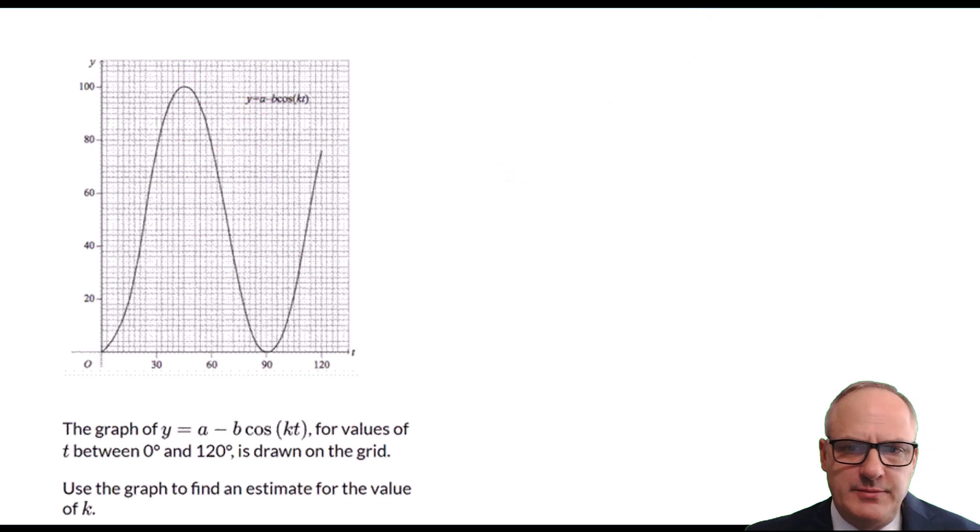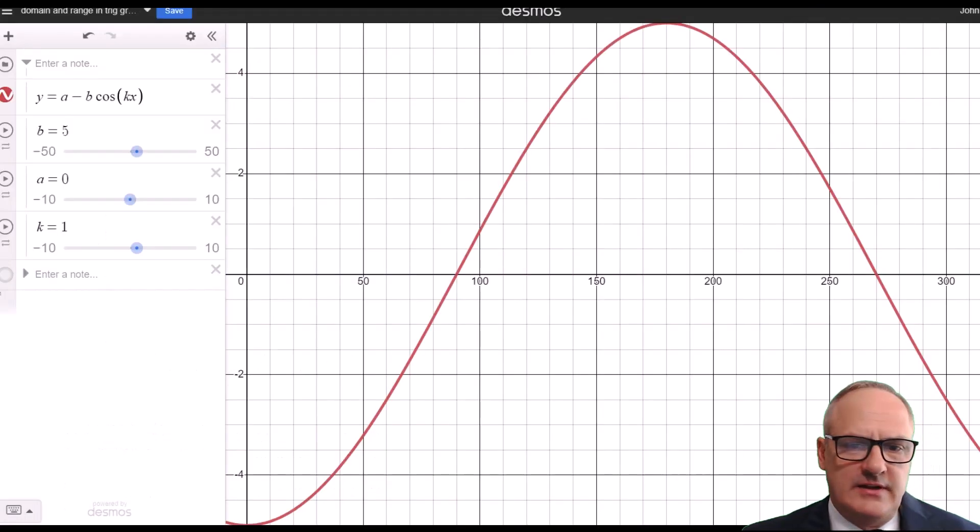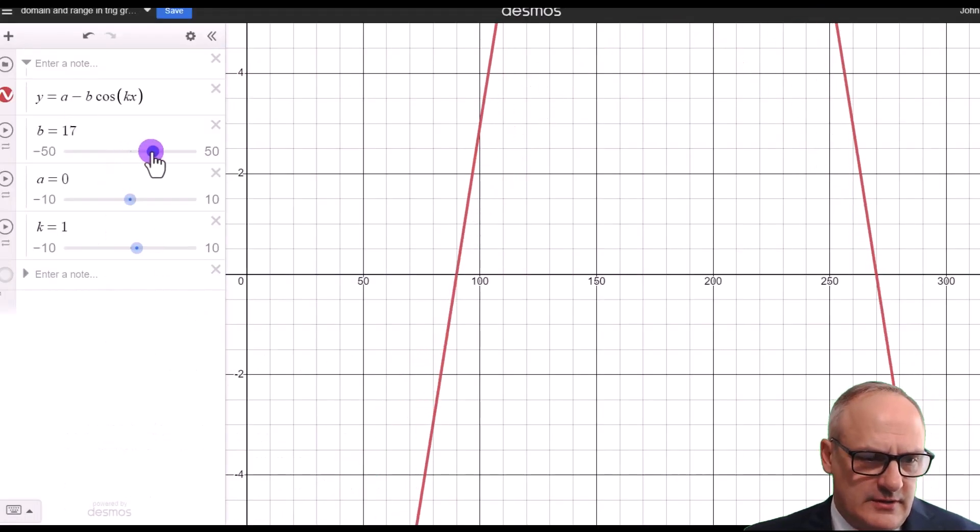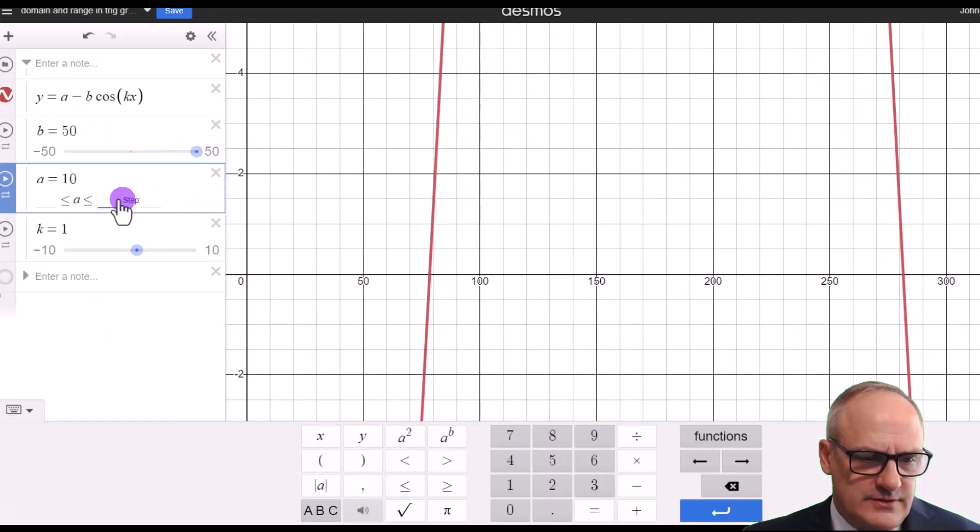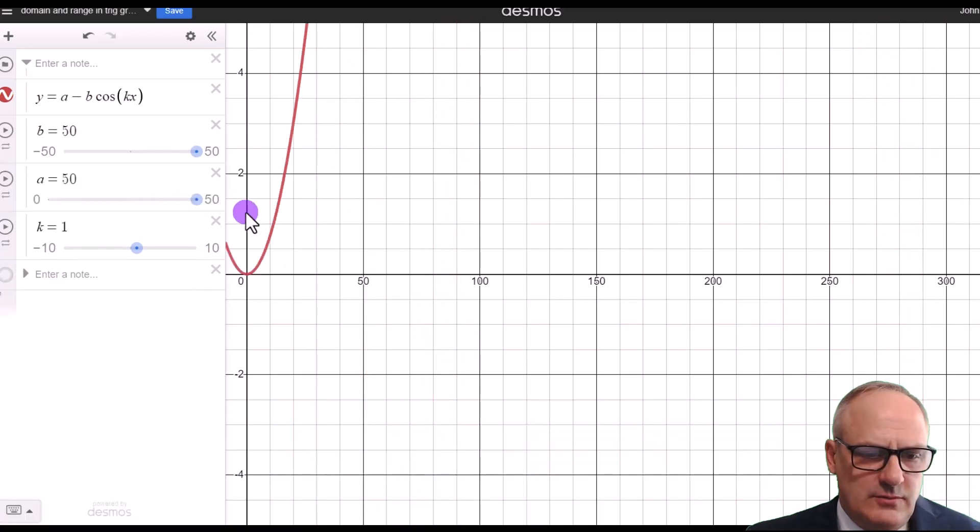So let's just get that on our graph. So let's make b 50, and let's make our a 50. Let's just make it go all the way up to 50.